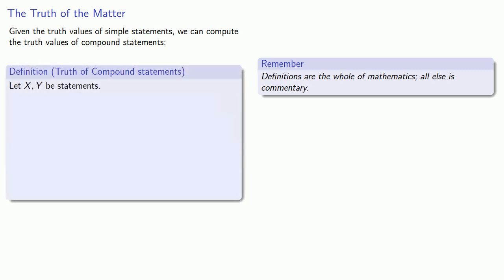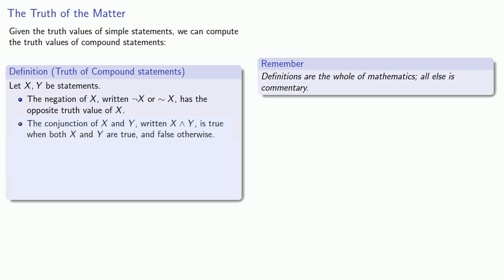Let x and y be statements. The negation of x, written this way, has the opposite truth value of x. The conjunction of x and y, written this way, is true when both x and y are true, and false otherwise.